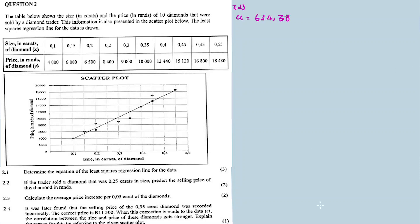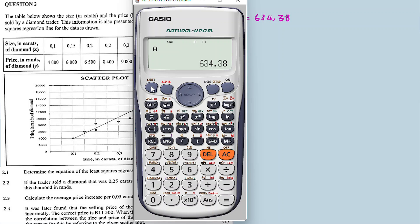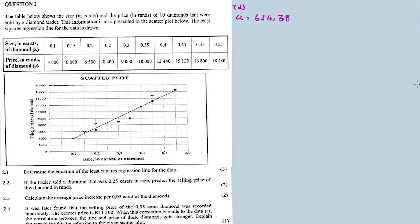So now for 2.1, our a is equal to that, and then our b. Number five regression, number two. Now b is equal to 2189.26.